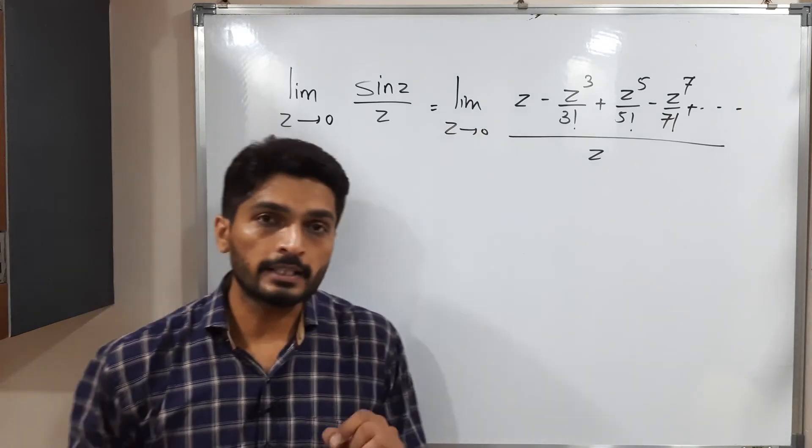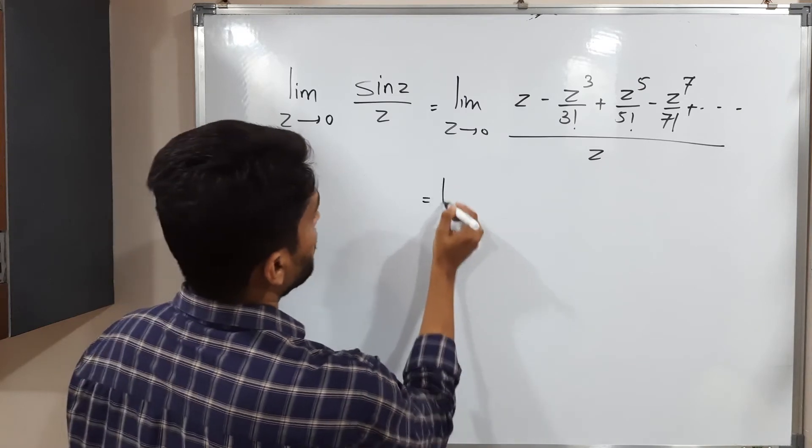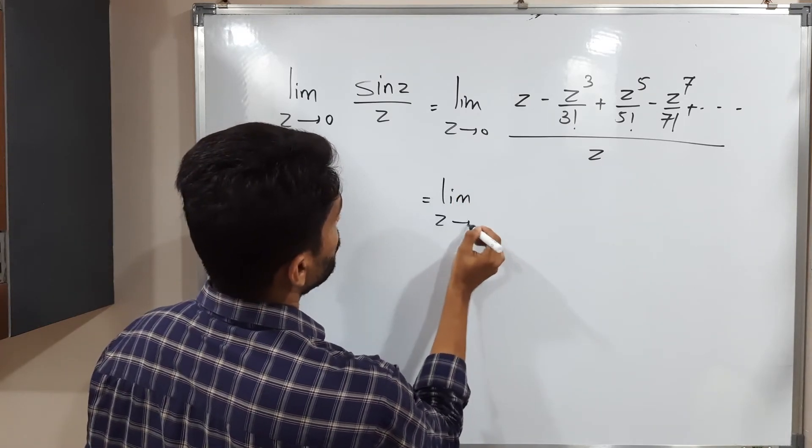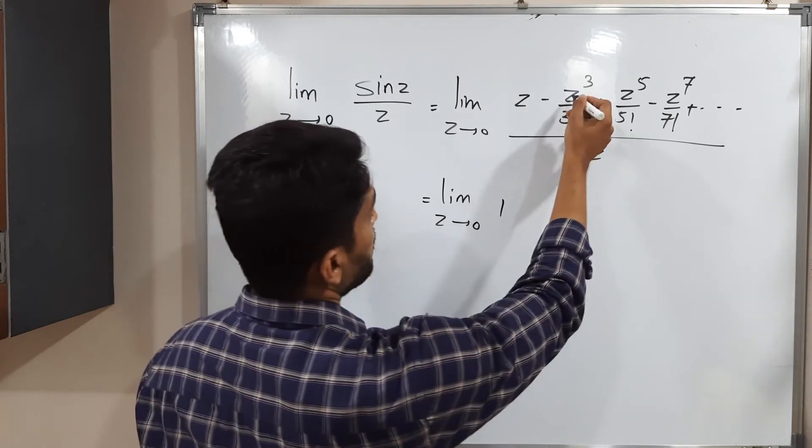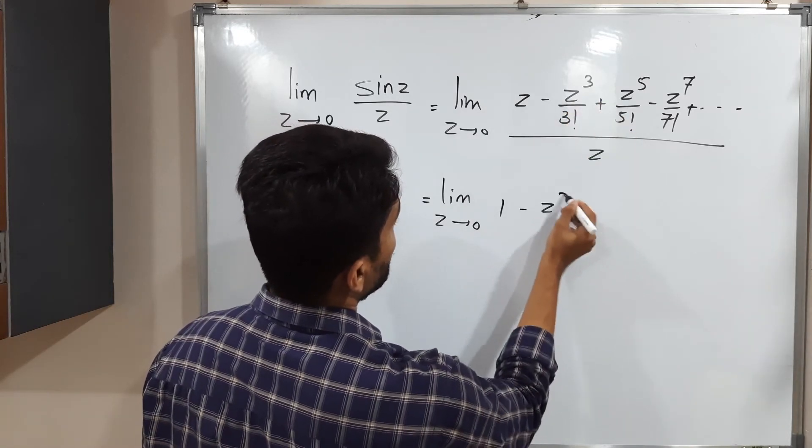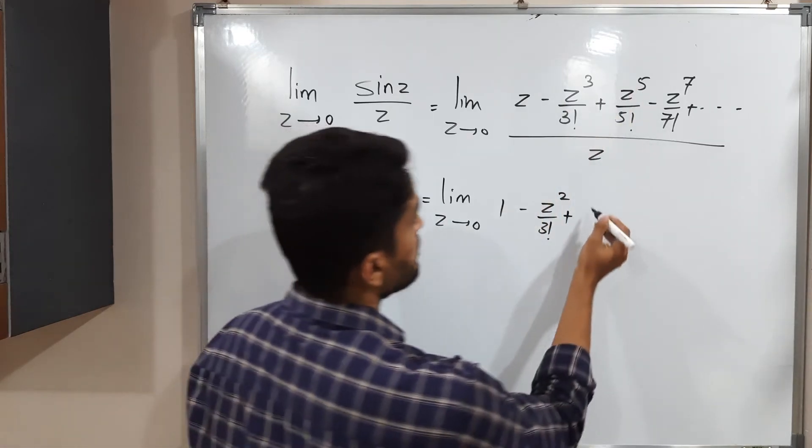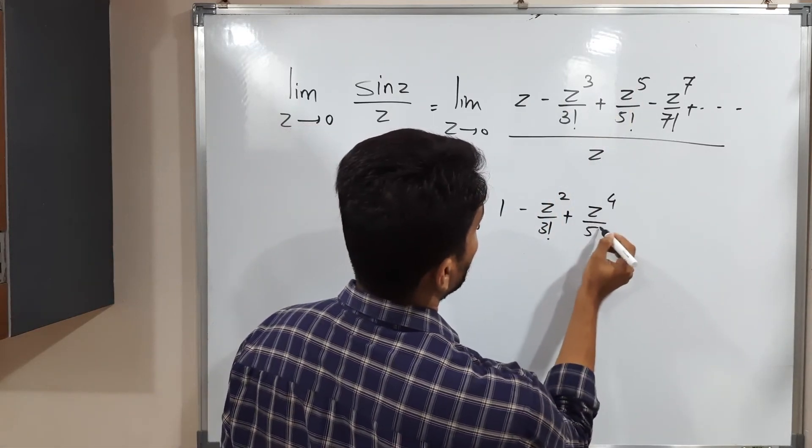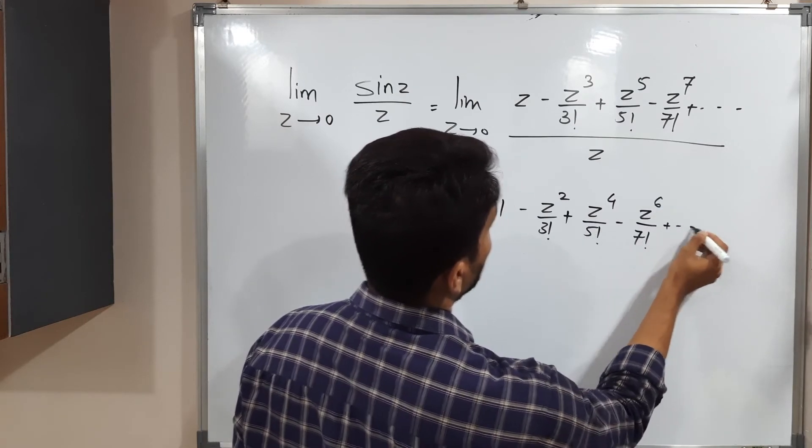We can divide each term by z separately. See what will happen if I divide separately, limit z tends to 0. z by z will get cancelled definitely. Minus z cube is there, 1 z will get cancelled, z square by 3 factorial. z raise to 5 is there, 1 z will get cancelled, z raise to 4 by 5 factorial minus z raise to 6 by 7 factorial. In this way we can write.